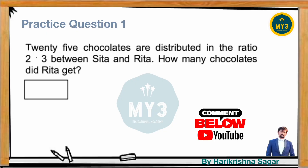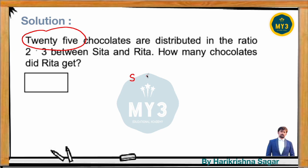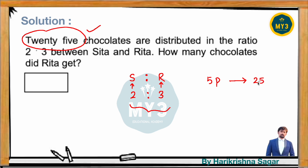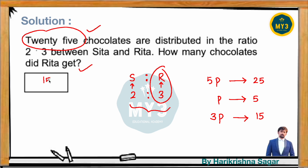Practice question number one: 25 chocolates are distributed in the ratio of 2:3 between Sita and Rita. How many chocolates did Rita get? We can see total 25 chocolates distributed between Sita and Rita in ratio 2:3. That means two parts received by Sita, three parts received by Rita. The sum of the parts is 5, and this five parts value represents the total 25 chocolates. So one part is 5, and three parts is 15. Answer: Rita received 15 chocolates.